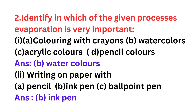Question 2: Identify in which of the given processes evaporation is very important. Options: (a) coloring with crayons, (b) watercolors, (c) acrylic colors, (d) pencil colors. The correct answer is (b) watercolors. Second part: writing on paper with a pencil, and ink or ballpoint pen — the correct answer is ink pen.